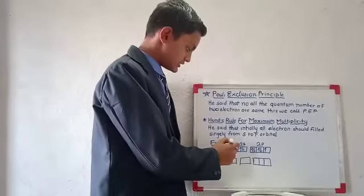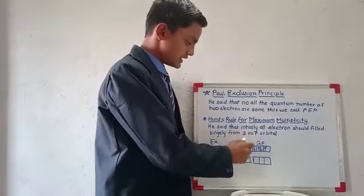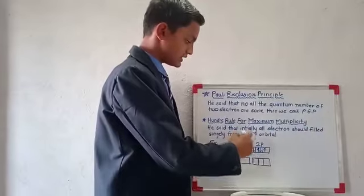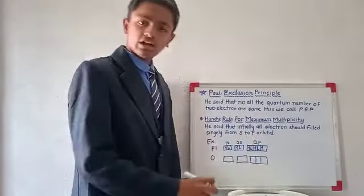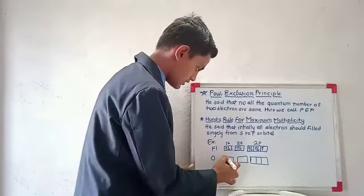Now see here on the board. We have to first singly fill like here, then here, here, here, and here. Not first like this and this—this is wrong. So now we will find for oxygen. First we have to fill singly orbital.